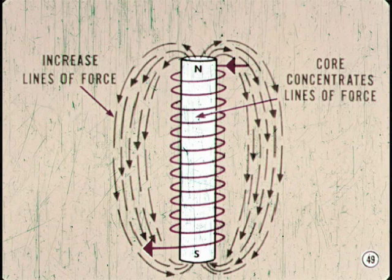If many turns of wire are wound around an iron core, we have a practical electromagnet. Increasing the number of turns of wire increases the lines of magnetic force. The iron core concentrates these lines of force to provide a much stronger field.